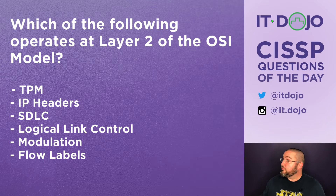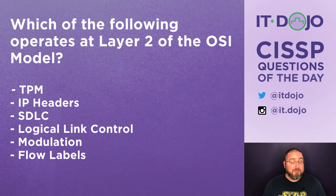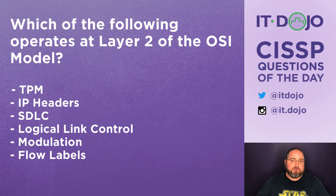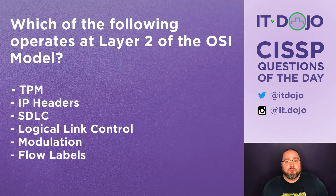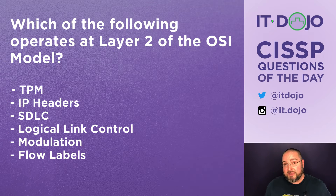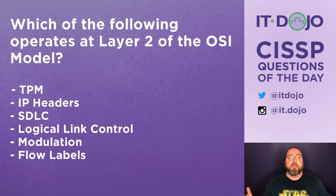Looking at those answer choices, you've got the Trusted Platform Module, a TPM — no, that's something integrated into your motherboard, a physical device that deals with cryptographic keys. IP headers — that's all about layer three. The Systems Development Lifecycle, SDLC, has absolutely nothing to do with the OSI model.